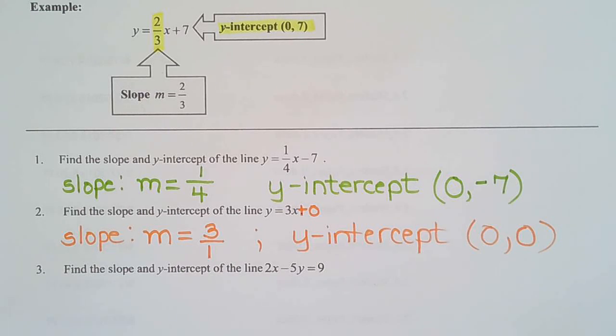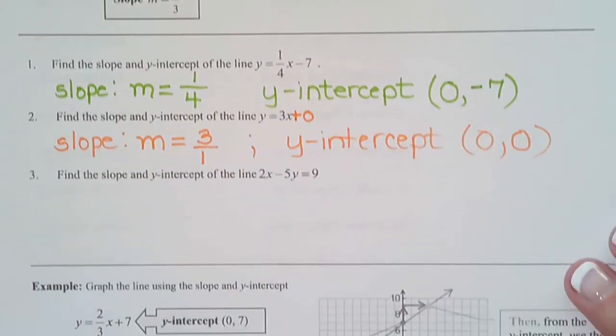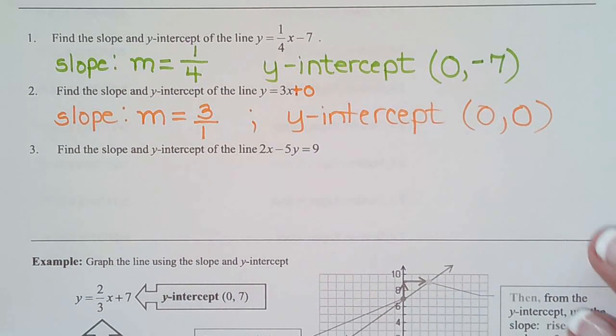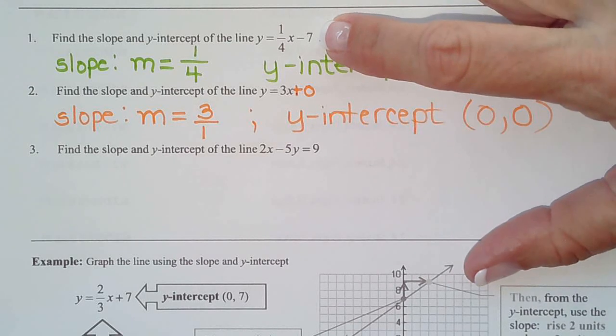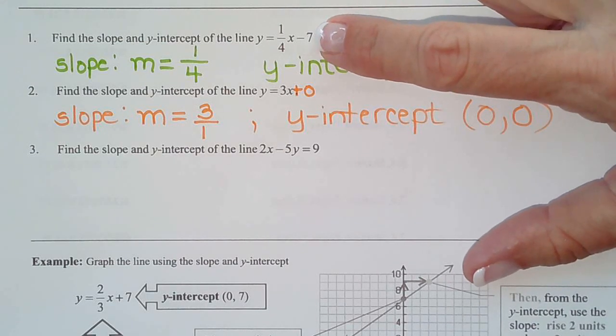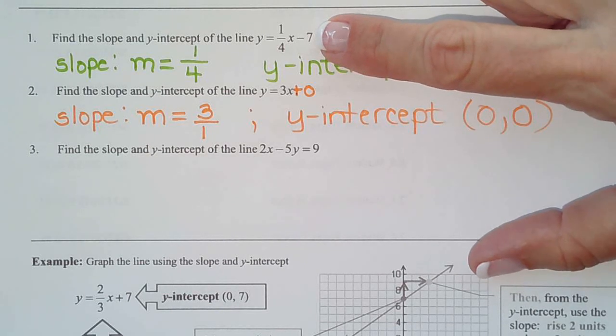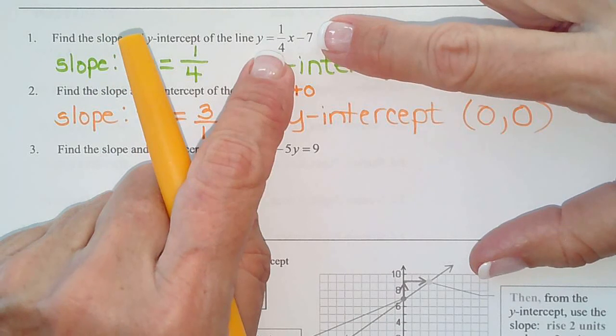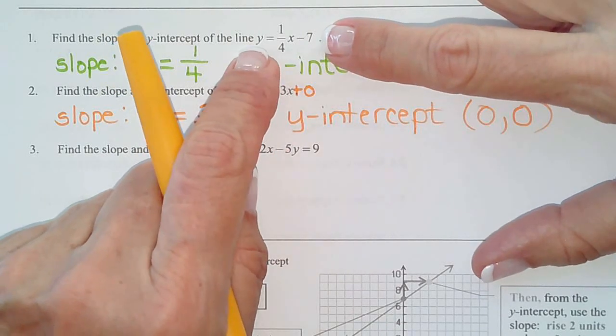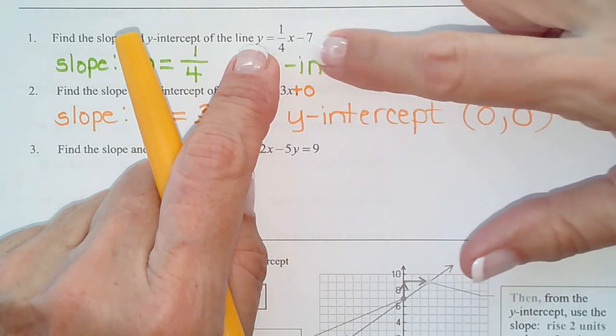Okay, so this next one's not quite so easy. Can anybody tell why? Is it in the form y equals mx plus b? No, it's not. So, we don't know what the slope is. We don't know what the y-intercept is. We have to make it look like this before we can tell anything. And look like this means get y alone on the left-hand side. Move everything else to the right-hand side.